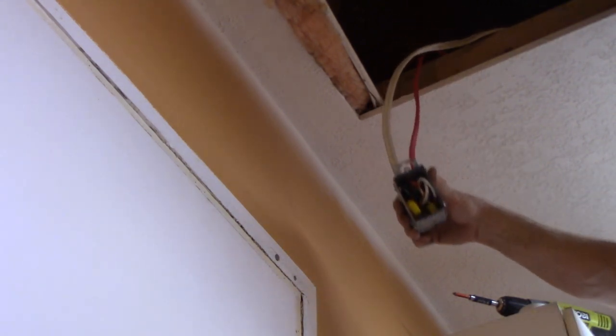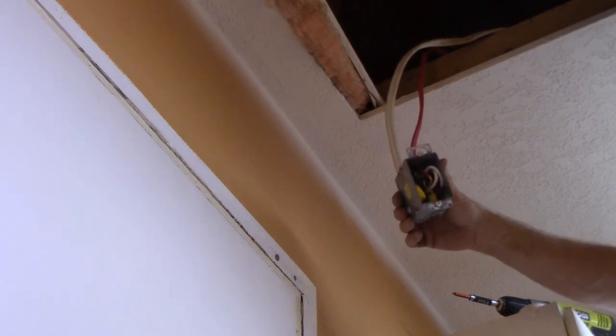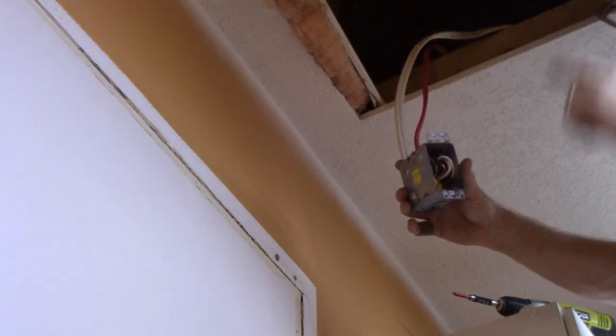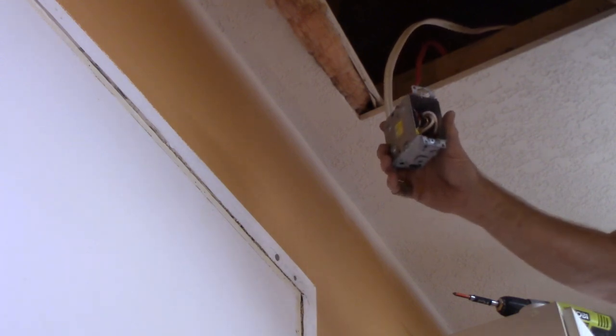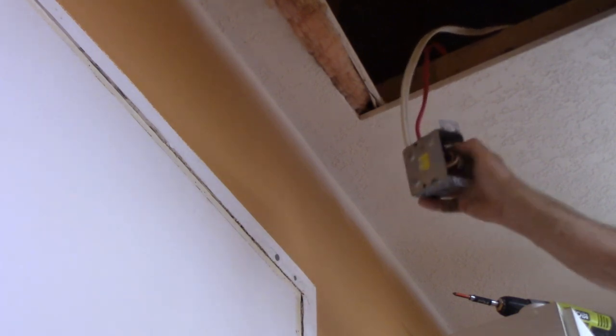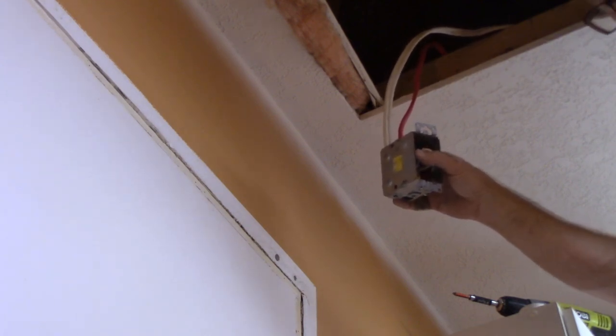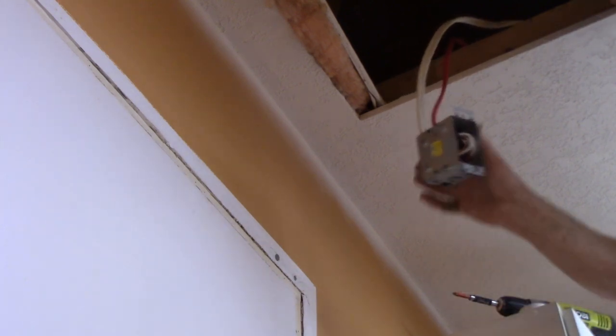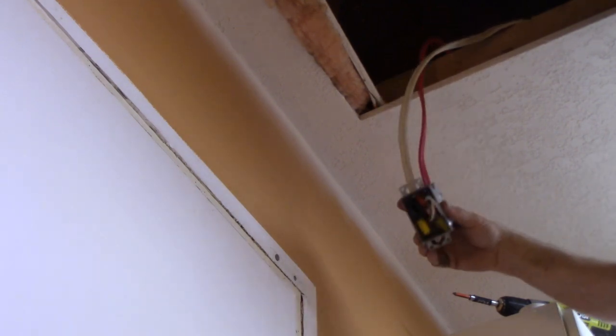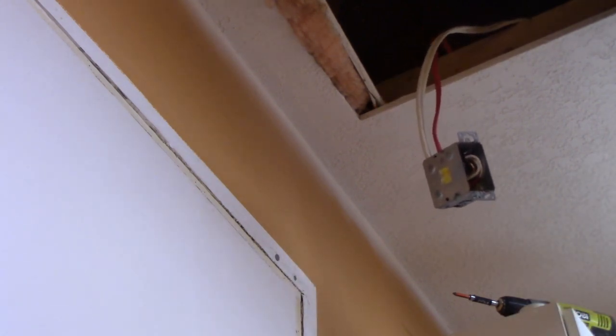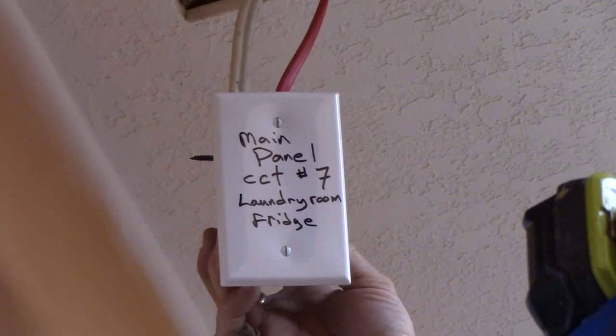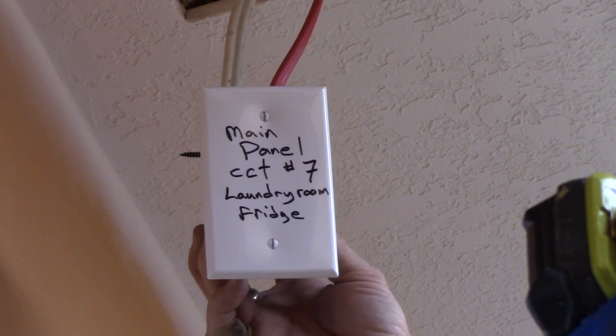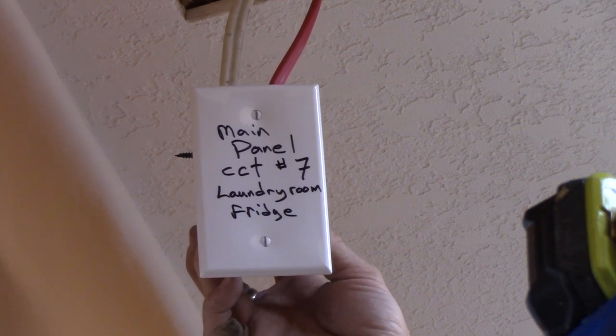I gave some thought to making this a receptacle because when I was working in the attic on a previous project there are no receptacles up there to plug in a trouble light. However there's another convenience outlet just below me here below the attic access so I thought rather than have a receptacle up there I can just plug into that one. It wouldn't have been a bad idea though. There you have it, my junction box together, cover plate on, and I labeled that plate to avoid any confusion for someone down the road. Main panel circuit number seven, laundry room fridge.